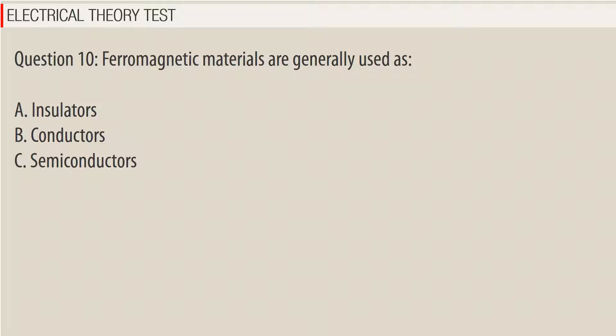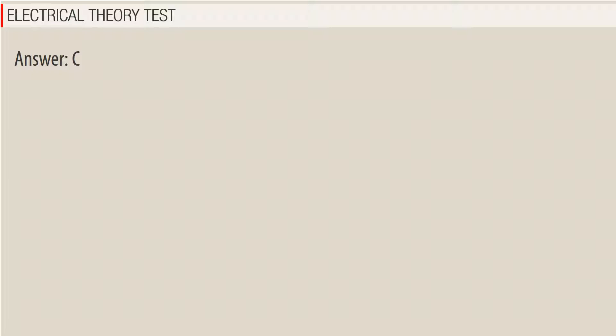Question 10. Ferromagnetic materials are generally used as: a. Insulators. b. Conductors. c. Semiconductors. Answer: (not clearly stated in transcript).